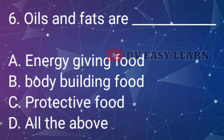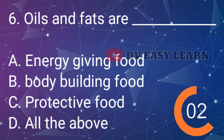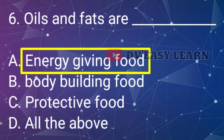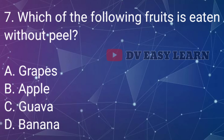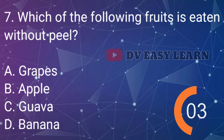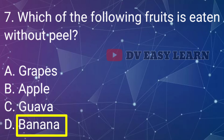Question No. 6: Oils and fats are — Correct answer: Energy giving food. Question No. 7: Which of the following fruits is eaten without peel — Correct answer: Banana.